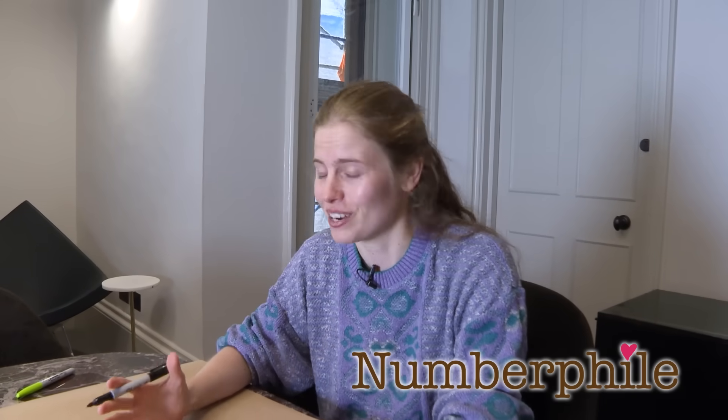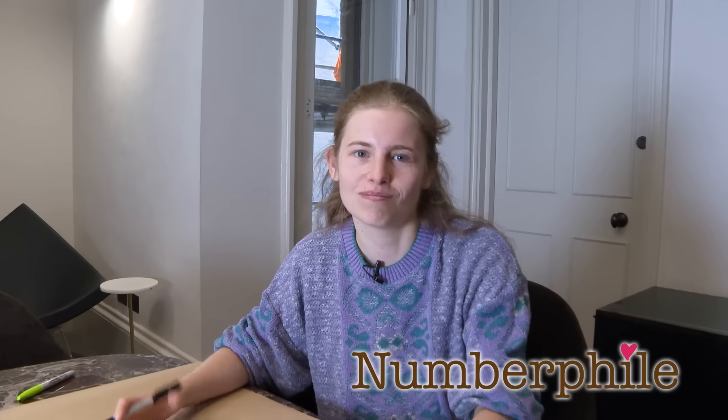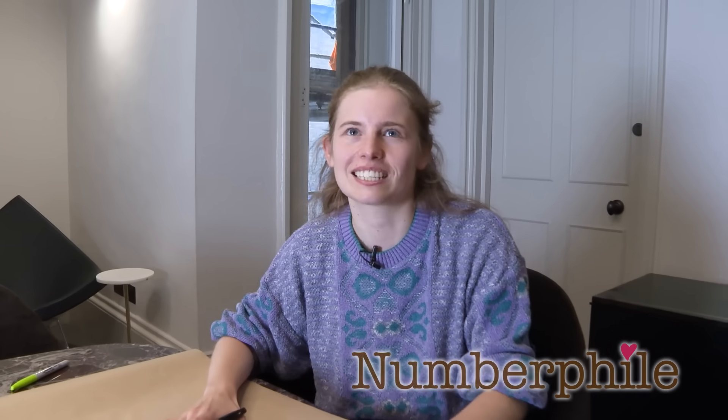So today we're going to talk about Euclid's algorithm. So give me two numbers, Brady. Two three-digit numbers, let's say. 484. 781.